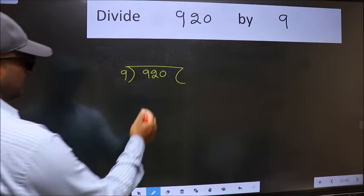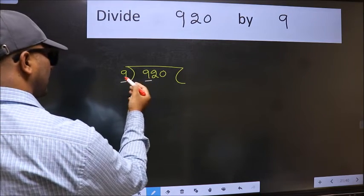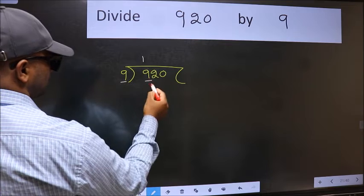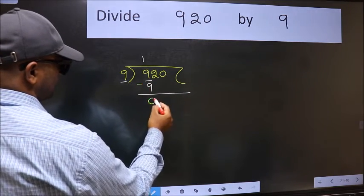Next. Here we have 9 and here 9. When do we get 9 in the 9 table? 9 once is 9. Now we should subtract. We get 0.